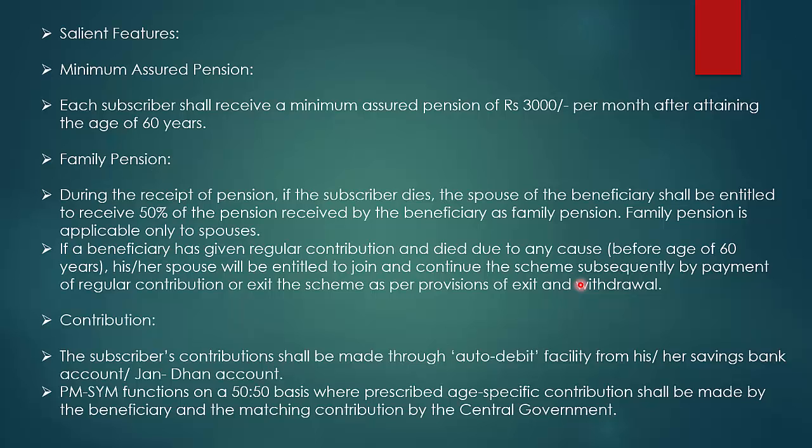If a beneficiary has given regular contributions and died before the age of 60 years, the spouse will be entitled to join and continue the scheme by payment of regular contributions, or exit the scheme as per the provisions of exit and withdrawal.